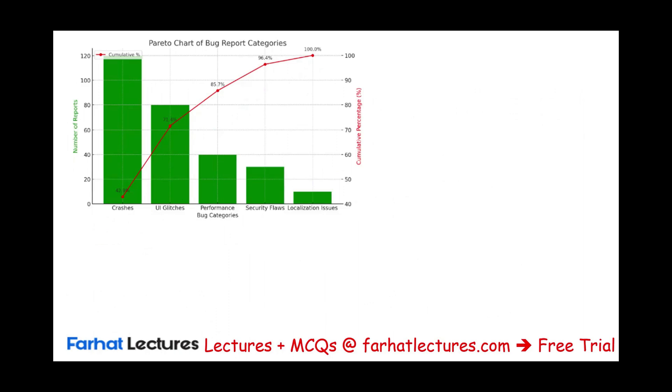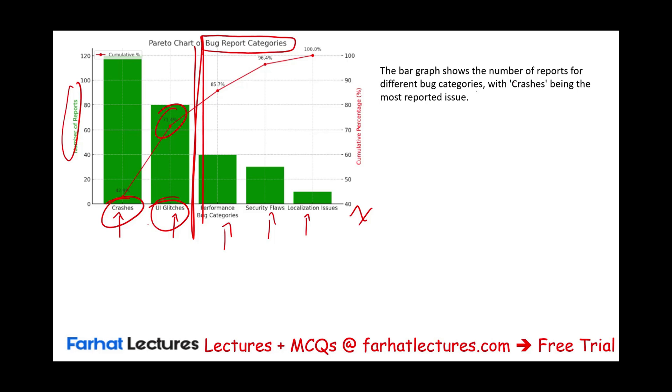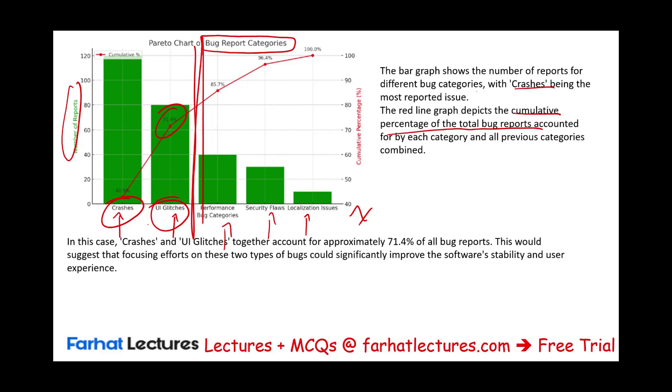Let's take a look at another graph to be comfortable reading it. This is a Pareto chart of bug report categories: crashes, user interface glitches, performance bugs, security flaws, localization issues. If I take crashes plus user interface together, they represent 71.4%. This bar graph shows the number of reports for different bug categories, with crashes being the most reported issue. The red line depicts the cumulative percentage of the total bug reports accounted for by each category and all previous categories combined. Crashes and user interface represent 71.4%, so we need to focus on these two issues to improve software stability. This visual representation helps the company prioritize the fixes.